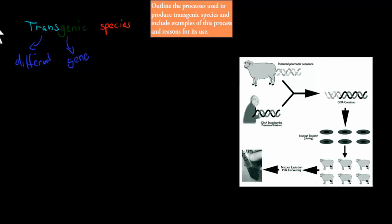An example would be if we take the DNA from a sheep and the DNA from a human. We take a small part of that DNA from a human — it might only be one gene.